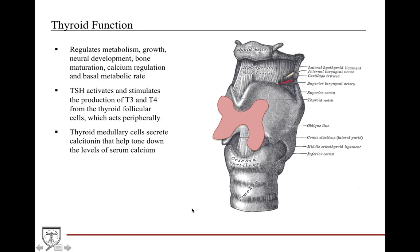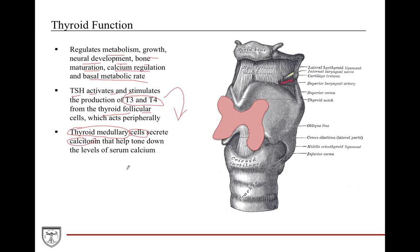The thyroid regulates metabolism, growth, neural development, bone maturation, calcium regulation, and the basal metabolic rate. It uses TSH to activate the thyroid to produce T3 and T4 from the thyroid follicular cells, which then go out to the periphery of the body to do their job. The thyroid also has medullary C cells that secrete calcitonin, which lowers serum calcium — calcitonin tones down calcium.